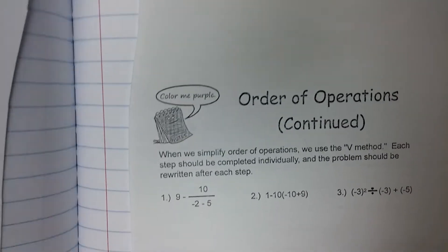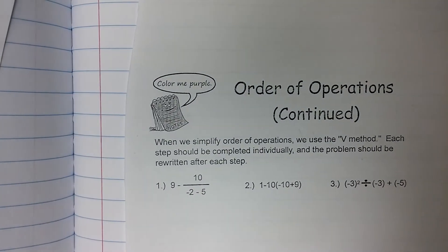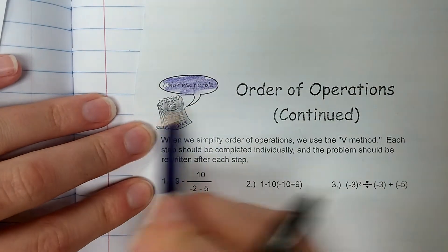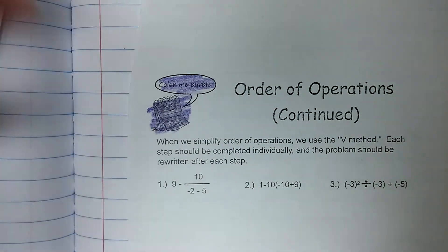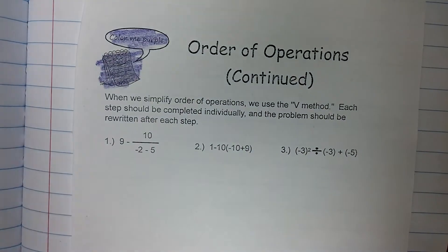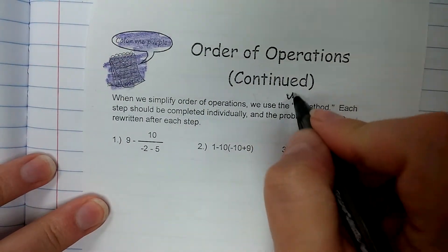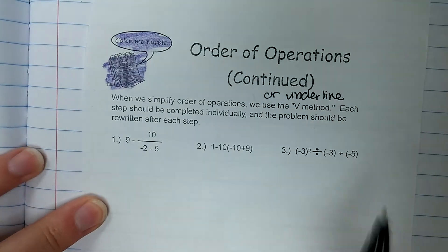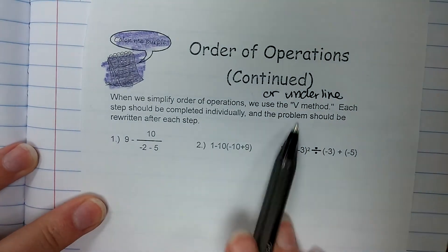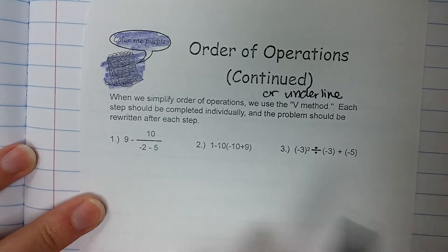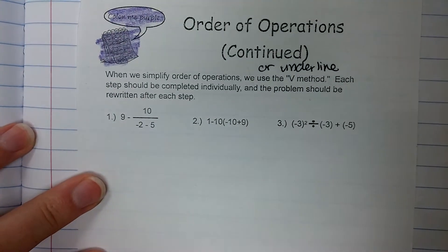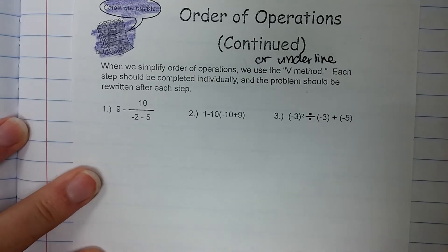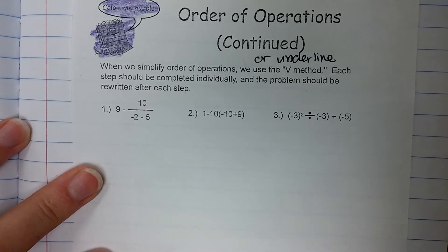So let's do a couple of examples. We're still in unit one, still purple. When we simplify order of operations, we can use the V method or the underline method. Either one works. Each step should be completed individually, and the problem should be rewritten after each step. This is very important that you show your work or document your thinking as you go through these.